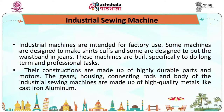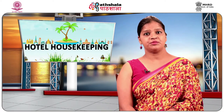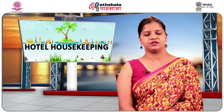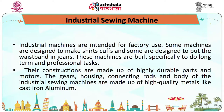Industrial sewing machines are intended for factory use. Some machines are designed to make shirts and cups, and some are designed to put waistbands in jeans. These machines are built specifically for long-term and professional tasks, made up of highly durable parts and motors. The gears, housing, connecting rods and body are made of high-quality material like cast iron and aluminum.